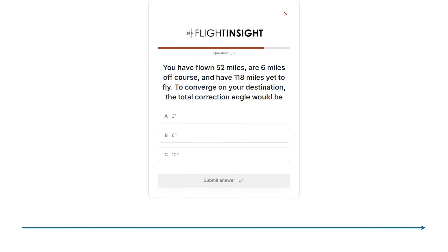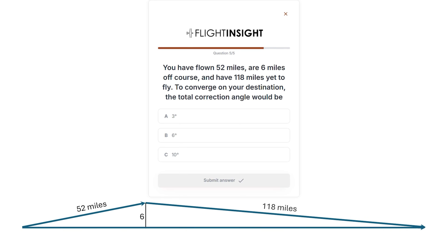For question 5, we're told we've flown 52 miles but are 6 miles off the centerline course to our destination, with 118 miles left to correct and get back on course. To find the total correction angle, we need the 1-in-60 rule: when 60 miles from a point, being 1 degree off takes you 1 mile off course. We're 6 miles off course, so if we were 60 miles from our departure point we'd be off by 6 degrees, but we're only 52 miles out. We divide 60 by 52, then multiply by our 6 miles off course to get a correction of 6.9 degrees.